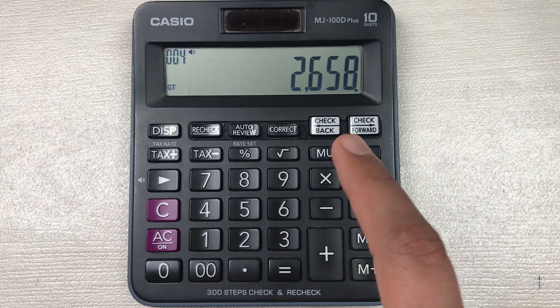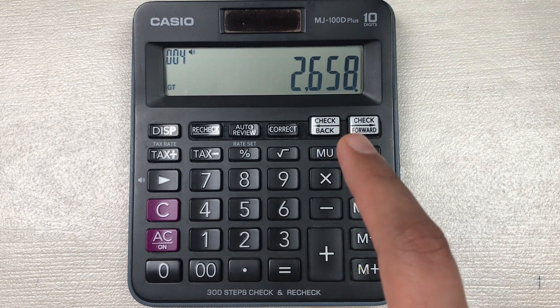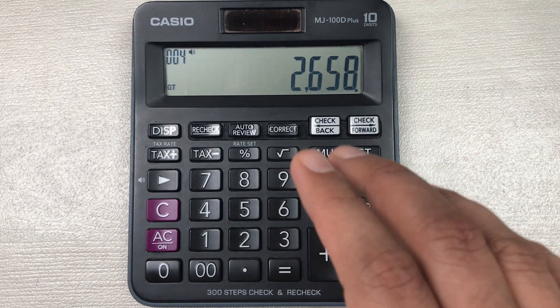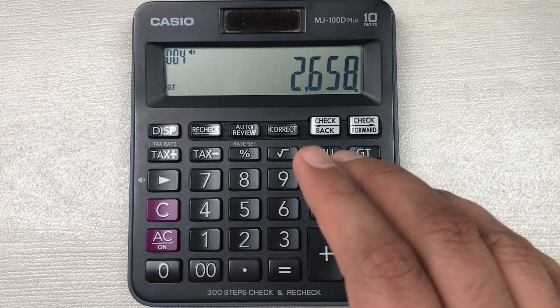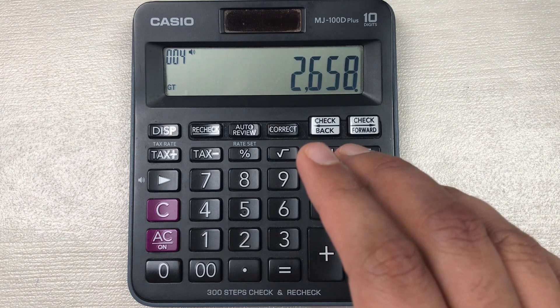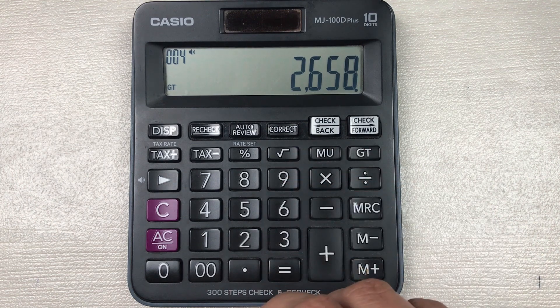So this is how you can find out the 90% off a price on your simple calculator.